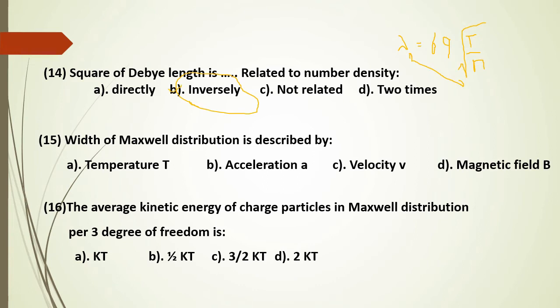The Maxwell distribution is described by a vector. The average kinetic energy of a charged particle in the Maxwell distribution for 1 degree of freedom is (1/2)kT, and for 3 degrees of freedom (3-dimensional) it is (3/2)kT. The answer is C.